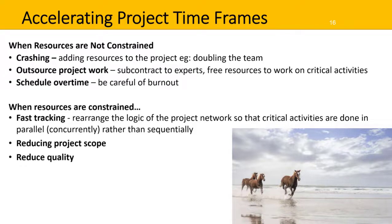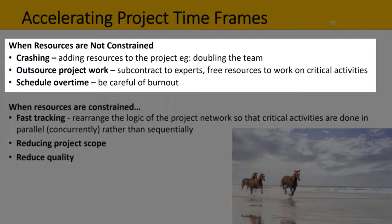There are a few options for reducing that time frame. When resources are not constrained, you might try crashing — that is, adding resources to the project. For example, you might double the size of the team. However, be aware of the law of diminishing returns, which means just because you double the team, it doesn't mean you'll get it done 50% faster. You might also outsource some or all of the project work, so by subcontracting to experts they can get things done faster and potentially better, and this will also free up your resources to work on critical activities.